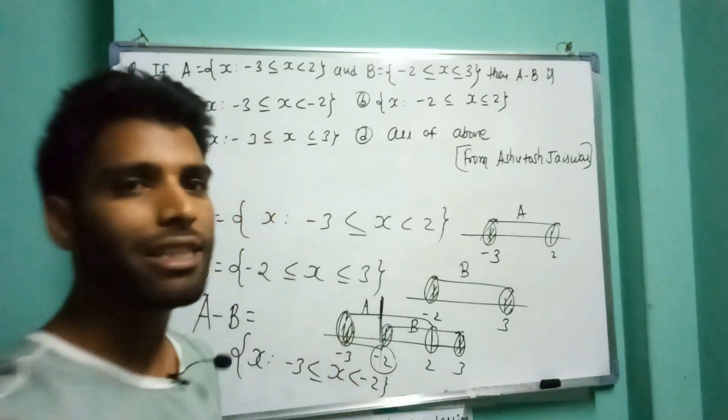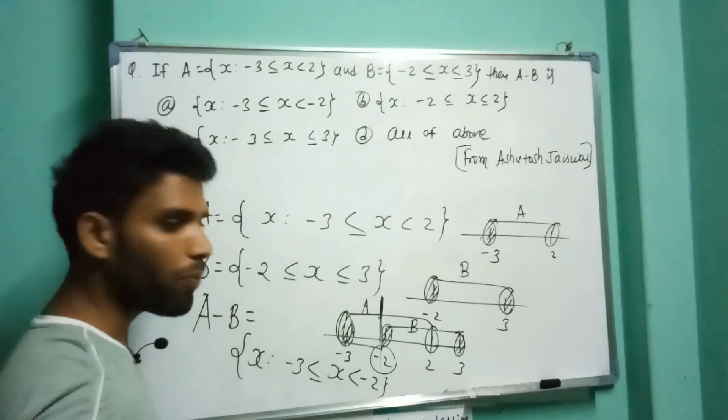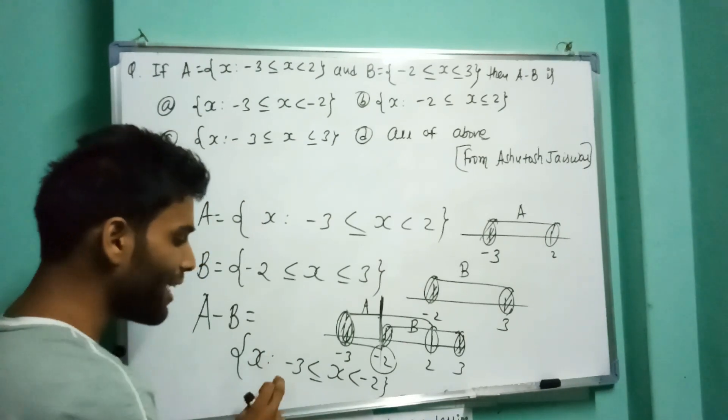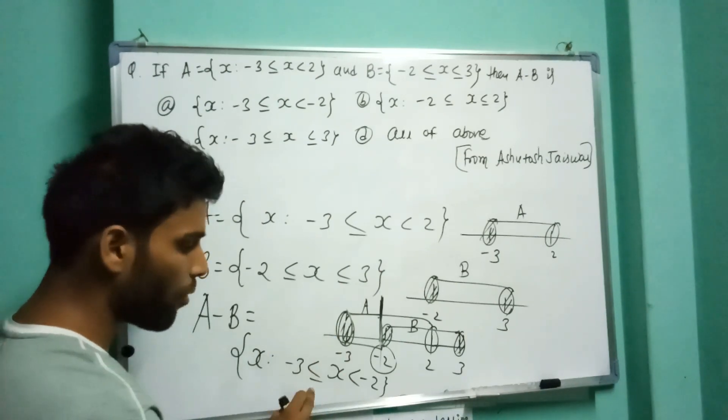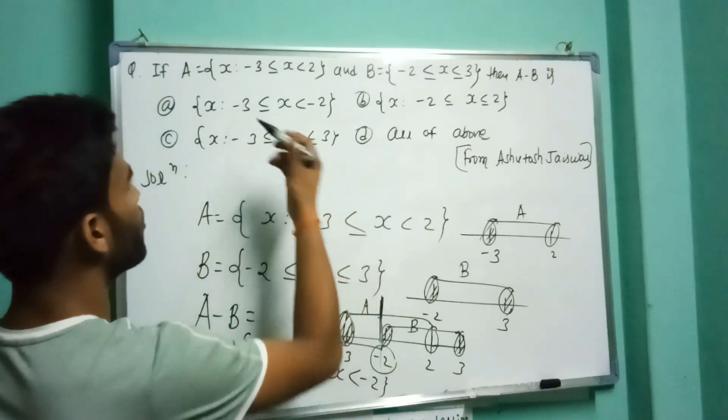So A minus B gives the values of x where x is in A but not in B. The answer gives us: minus 3 less than or equal to x less than minus 2.